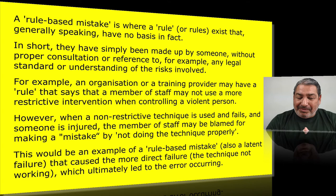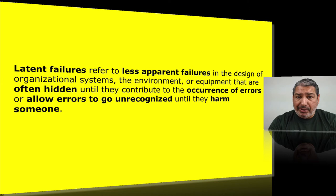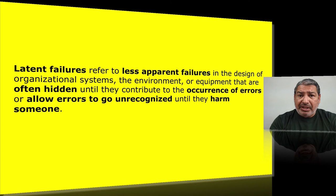This is a prime example of a rule-based mistake, also called a latent failure. A latent failure is something that causes a more direct failure. Latent failures refer to less apparent failures in the design of organisational systems, the environment, or equipment that are often hidden until they contribute to the occurrence of errors or allow errors to go unrecognised until they harm someone. In many training programmes, there are complex multi-component techniques — fine motor skill stuff — that are great in the gym but fail in high-stress situations because the knock-on consequences haven't been considered.